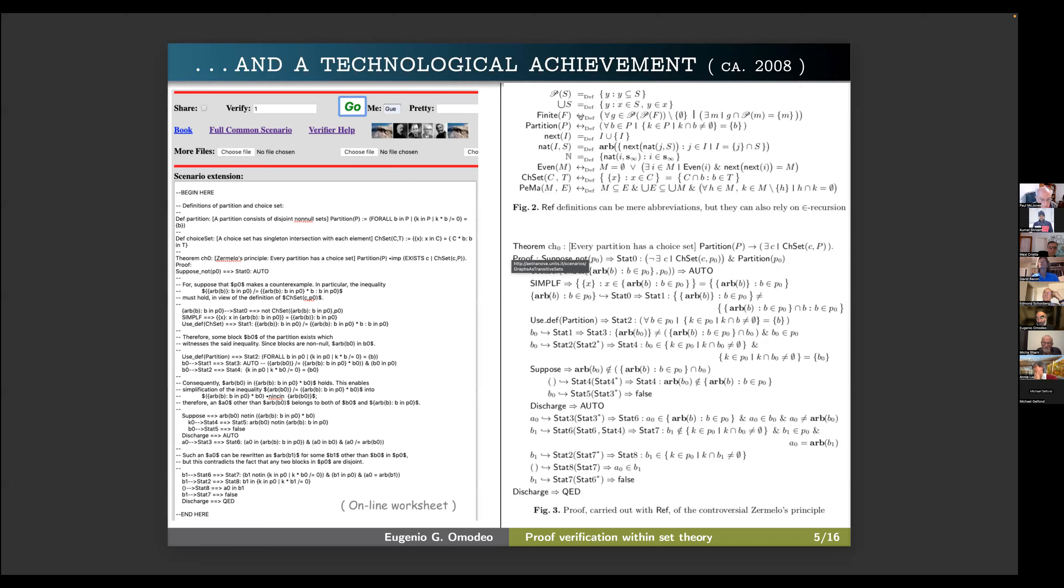What you see on the top is another significant difference between AETNANOVA, the proof verifier, and SETL. And because as you see here, one defines a finite set. The set is finite if every family of subsets of F, which is non-empty, has an inclusion minimal element M. So this is the definition of finiteness, and this clearly indicates that the set theory we are talking about is a theory which hosts infinite sets, such as, for instance, the set of natural numbers.